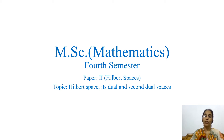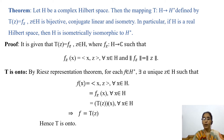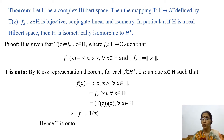Today I will discuss dual space and second dual space of a Hilbert space. We shall prove a theorem which states that: let H be a complex Hilbert space, that is H is a Hilbert space over the field of complex numbers. Then the mapping T from H to H star, where H star is the set of all bounded linear functionals on H, defined by T of Z equals F_Z for Z belonging to H, is bijective, conjugate linear, and isometric.